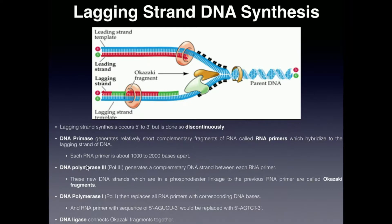We have another enzyme called DNA polymerase 3, also called Pol3. Pol3 generates a complementary DNA strand between each RNA primer. Right at the very edge of that RNA primer, it will start synthesizing a DNA fragment going all the way until it hits the next primer. This fragment of DNA — shown in red — is called an Okazaki fragment. This Okazaki fragment is covalently joined to the green primer right here, but it is not covalently joined to the next primer — it's just next to it.